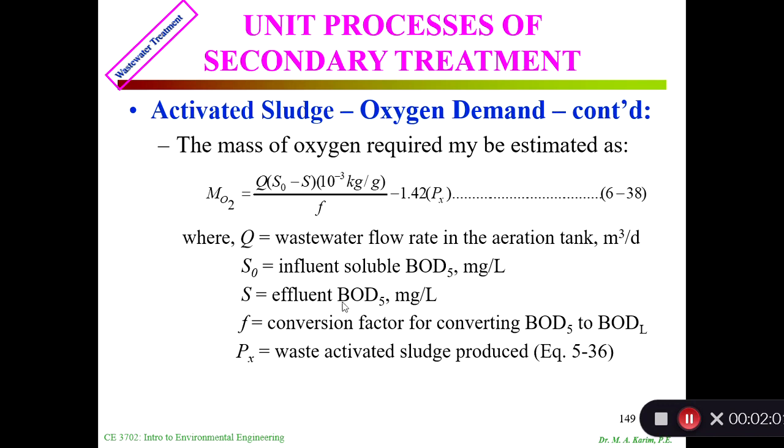F is the conversion factor for converting BOD5 to BOD ultimate. Most of the time it is 67%, two-thirds of BOD ultimate. BOD5 is two-thirds of BOD ultimate. We can consider 0.67 or 0.68. Px is the waste activated sludge produced - we have seen the equation before.